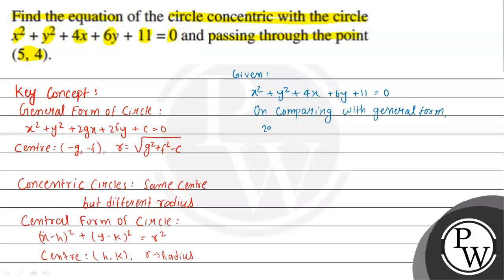The coefficient of x is 2g = 4. Similarly, the coefficient of y is 2f = 6. And the constant term is c = 11. So the value of g is 2, f is 3, and c is 11.